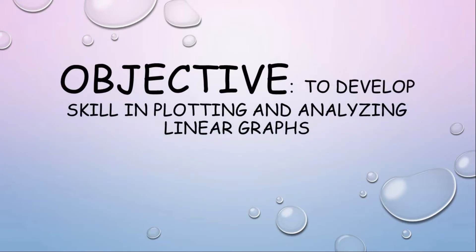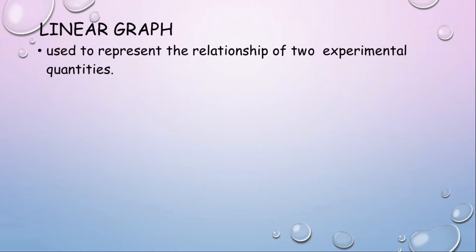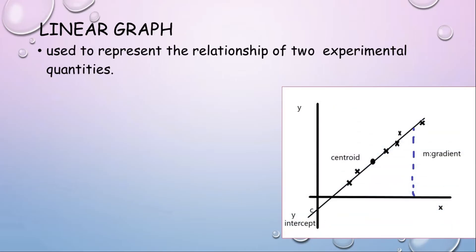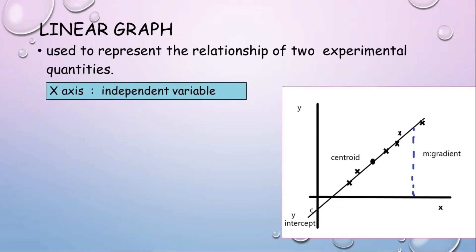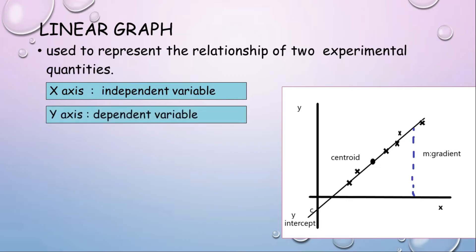The objective for this experiment is to develop skill in plotting and analyzing linear graphs. A linear graph is used to represent the relationship of two experimental quantities. This is an example of a linear graph. The graph is a straight line and has an x-axis, which is the independent variable, and a y-axis, which is the dependent variable.